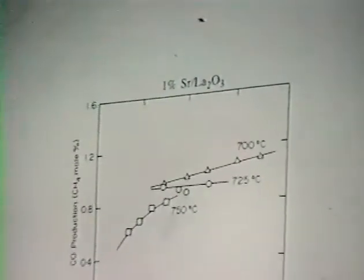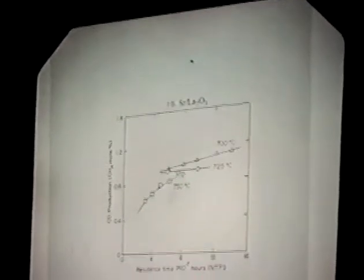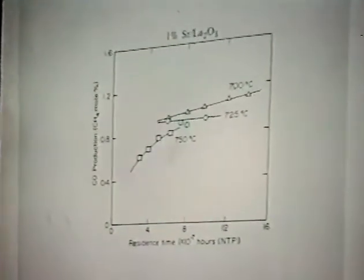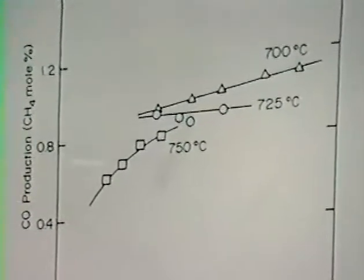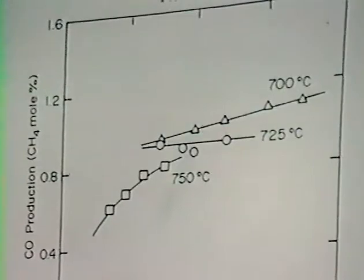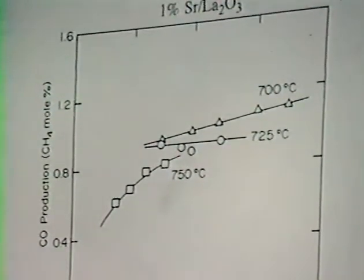There's one other interesting thing that we found out was that when you just look at CO production by itself, you don't obtain straight lines of the rate with residence time. And also the curves are fairly flat, and the other interesting thing is that the amount of CO produced decreases with increasing temperature. So this suggests that CO is produced somewhere in the middle of the reaction sequence or is rapidly consumed in a subsequent reaction, or that it's involved in an equilibrium process with some of the other products of the reaction.